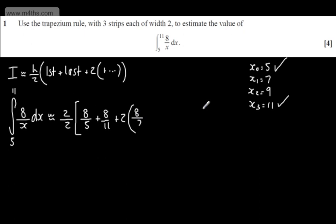So we'll have 8 over 7 and then 8 over 9, so plus 8 over 9, and then we will evaluate this.